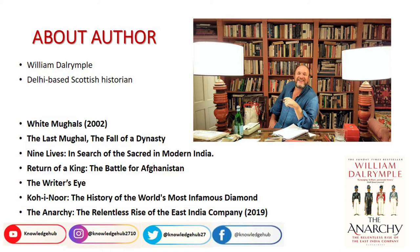Some of his main and very famous books are White Mughals, The Last Mughal, Nine Lives, Return of a King, The Writer's Eye, Kohinoor, and The Anarchy. You can understand that he has a very strong grip on Mughal history and the history of the subcontinent. One of his very famous books is Kohinoor, where he wrote a lot about the most infamous diamond. And the book we have chosen to discuss today is The Anarchy.